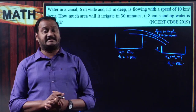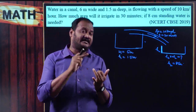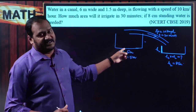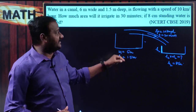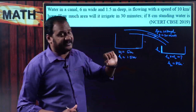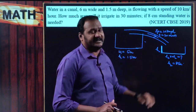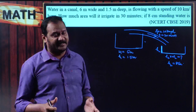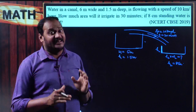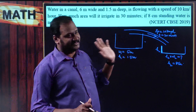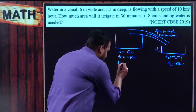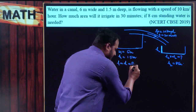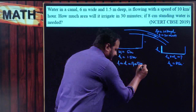To find the volume of the canal (a cuboid), you need length, width, and height. We do not know the length of the canal, but the speed of water flow and the time are given. With speed and time, we can find the distance traveled by the water in that period, and that distance is considered as the length of the canal. Distance equals speed multiplied by time.